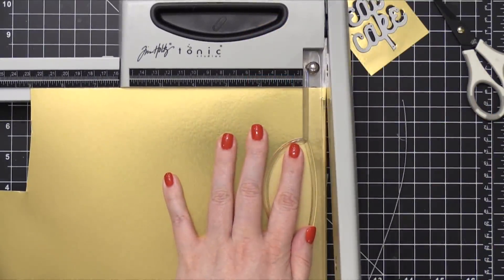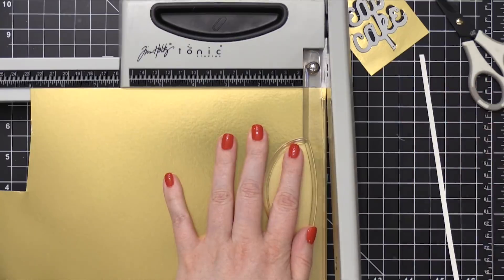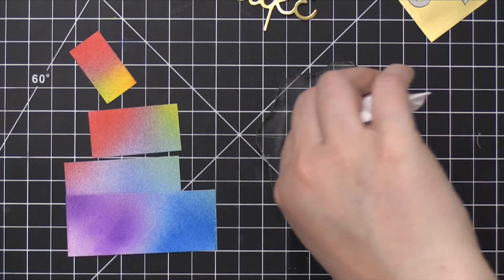And to decorate the layers of the birthday cake, I thought it'd be fun to have a little narrow strip of that gold cardstock at the bottom of each layer.